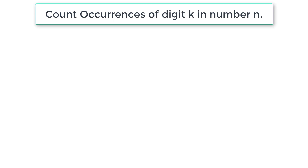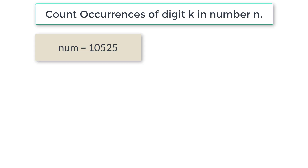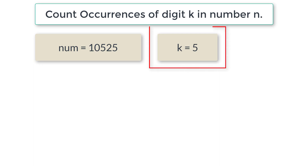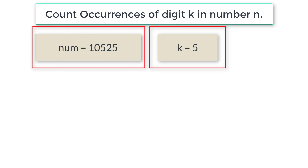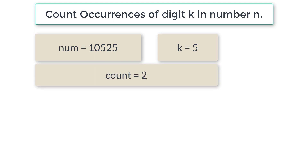Let's write a C program to count the number of occurrences of digit k in user entered number n. In a previous video tutorial, we explained the same logic using a recursive function. So in today's video tutorial, let's do the same thing using iterative logic. Let's assume that the user has entered num value as 10525 and k value as 5. In that case, 5 has appeared twice in this number, so count value should be 2. Our program should output count as 2. This is the objective of our program.